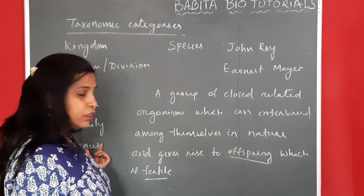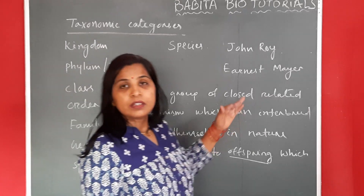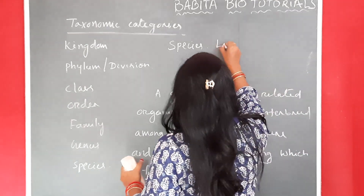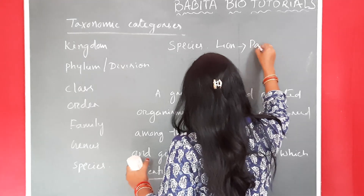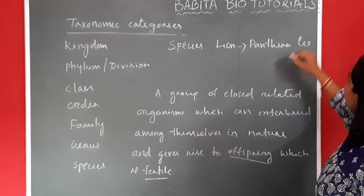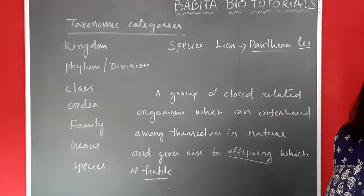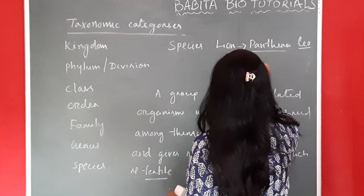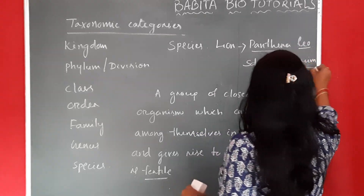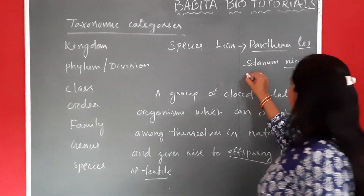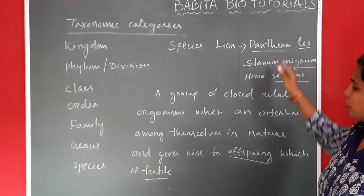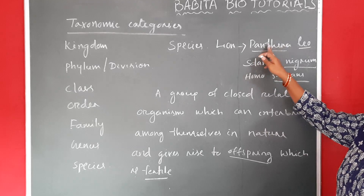Now, before we go for the genus, we will try some examples of your species. Your lion — we will call it Panthera leo. Leo is the species and Panthera is the genus. For example, Solanum nigrum — nigrum is the species. Like Homo sapiens — sapiens is the species. These are examples of some species names, which include your genus and the species.